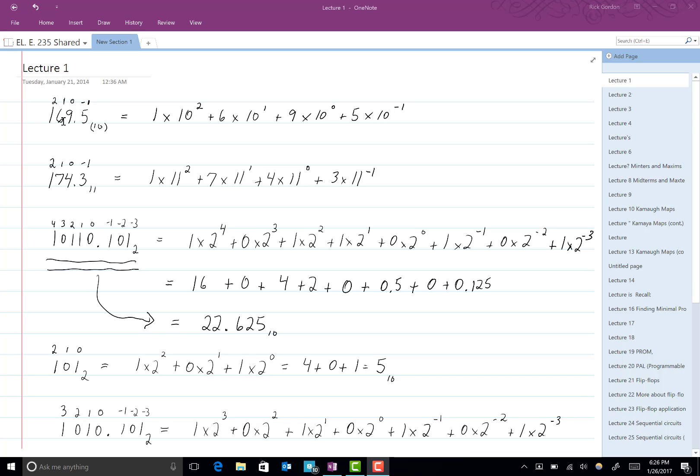When we write something like this number here, 169.5, we ordinarily mean that is 169.5 base 10. To elaborate on exactly what that means, we need to locate the decimal point first. That's the first step. Then we will label the positions in this number. The first position to the left of the decimal place is the zero position. The one to the left of that is the one position. To the left of that is the two position, and so on.